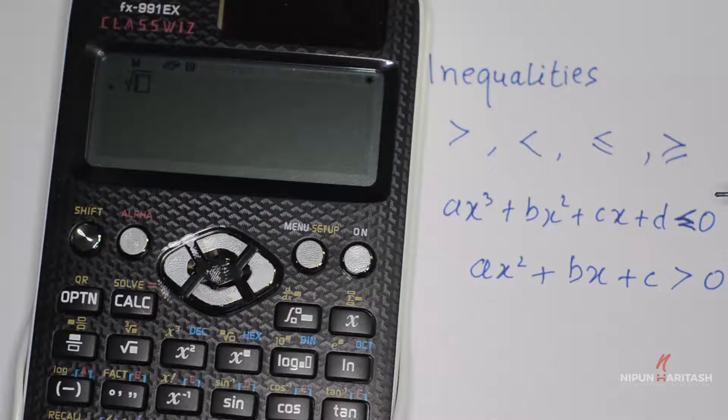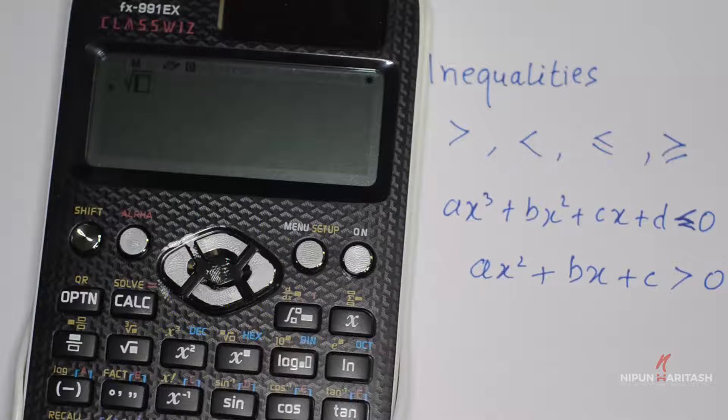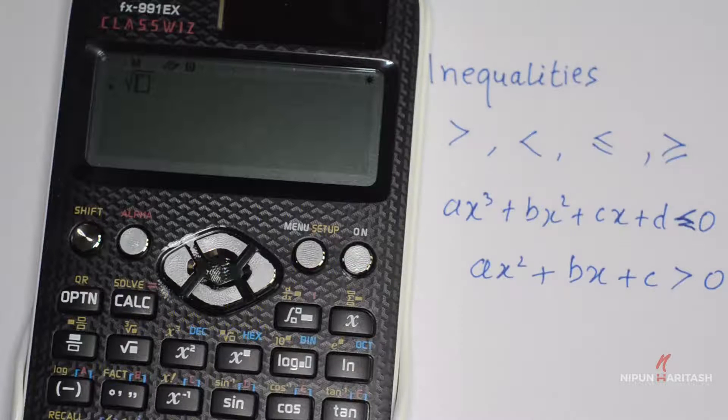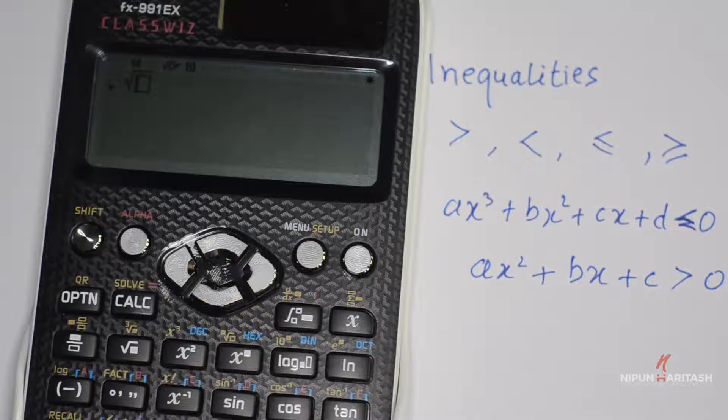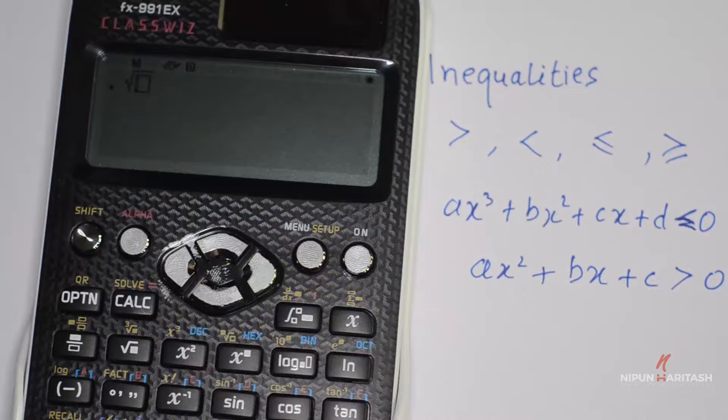ax³ + bx² + cx + d ≤ 0, and ax² + bx + c > 0. That's an equation of second order. This calculator has a feature to calculate inequalities using one of its modes.